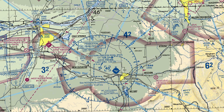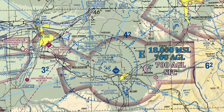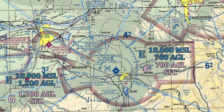Inside of that faded magenta line, we have Class G airspace going from the surface to 700 feet AGL. Above that, Class Echo starts at 700 feet AGL and goes up to 18,000 feet MSL. Outside of the faded magenta line, Class G goes from the surface to 1,200 feet AGL, and then Echo fills in the gap starting at 1,200 feet AGL.